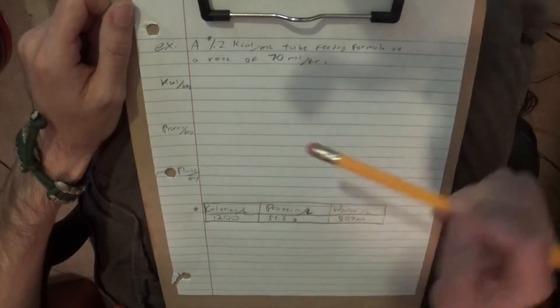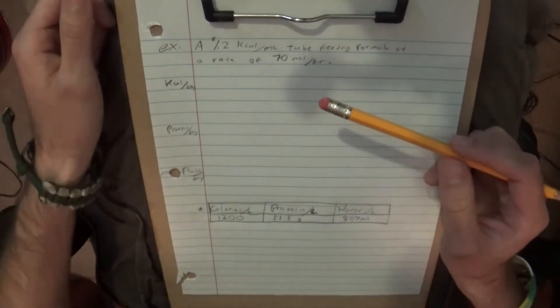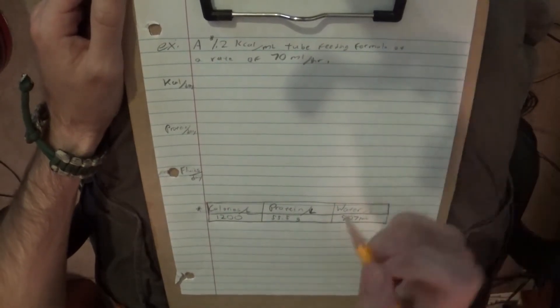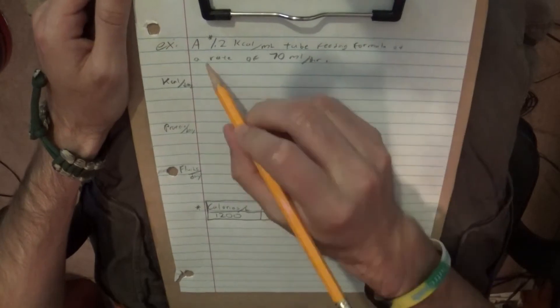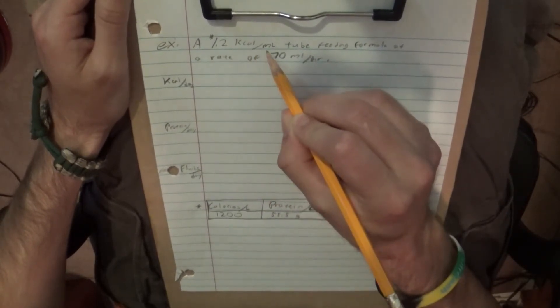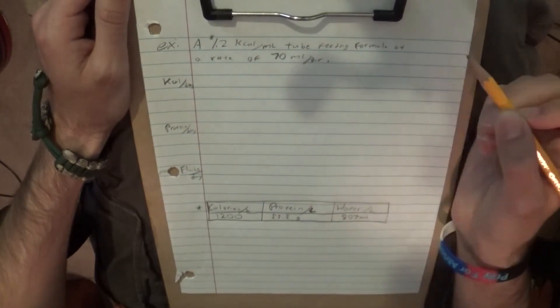This is a tube feeding question, but the way I'm going to do this is going to apply to a lot of chemistry and physics related shortcuts in math. So, let's start with, we have someone who's on a 1.2 kilocalorie per milliliter tube feeding formula at a rate of 70 milliliters per hour.